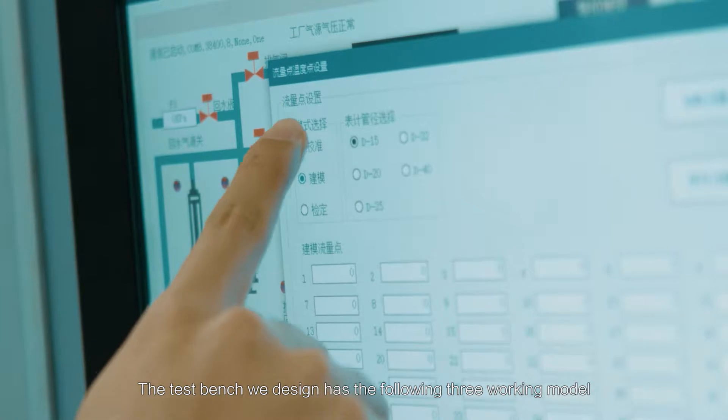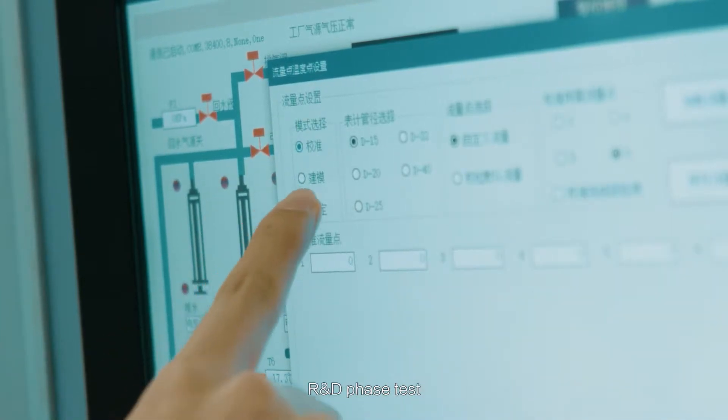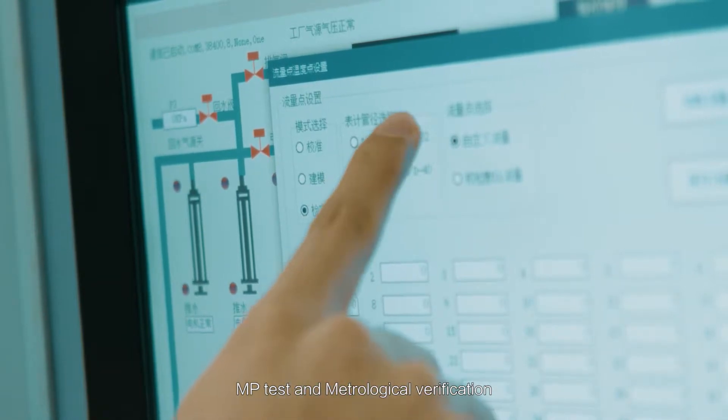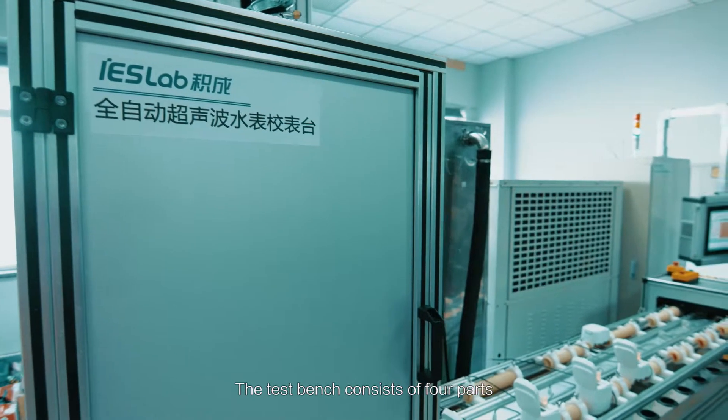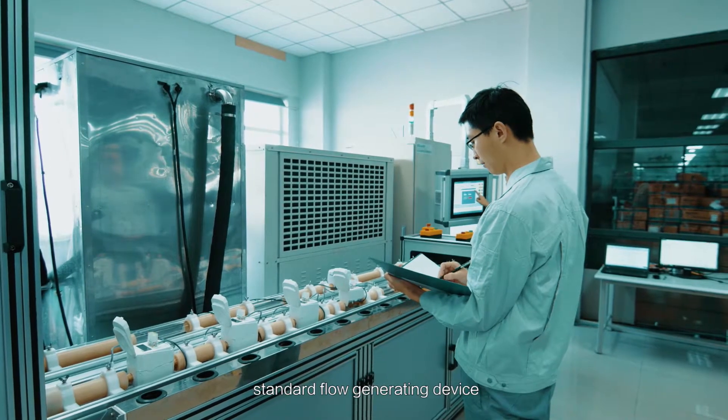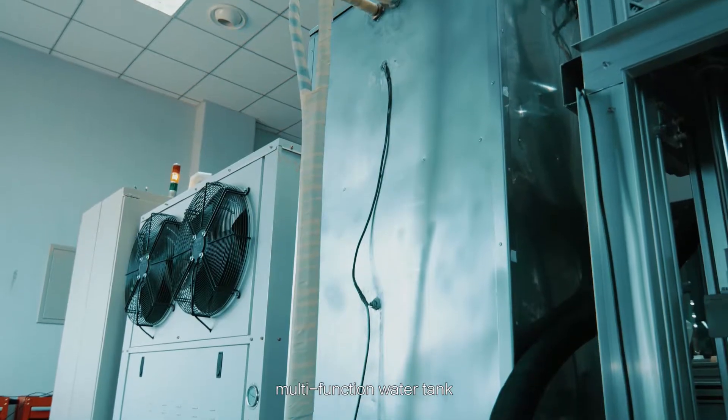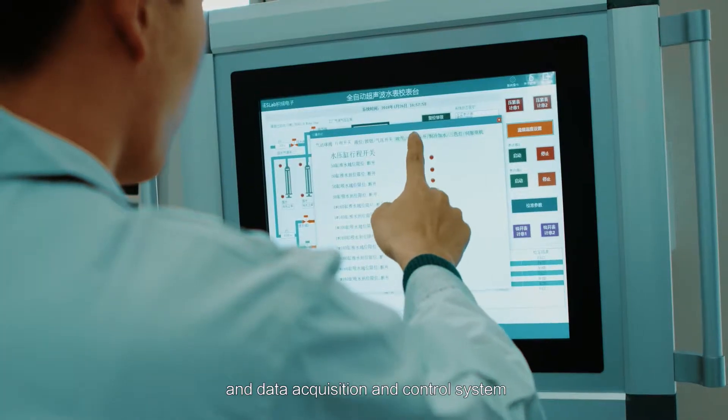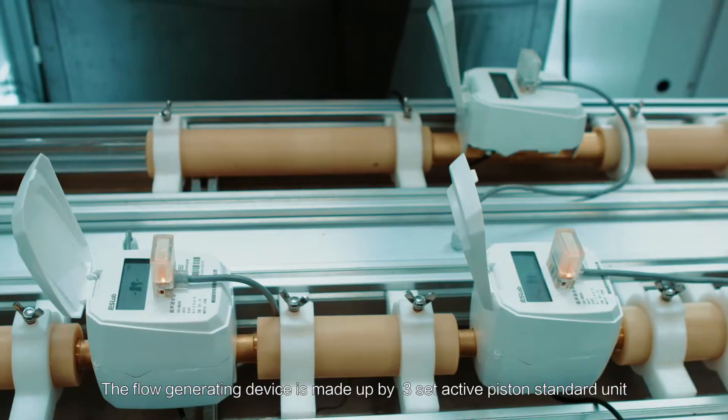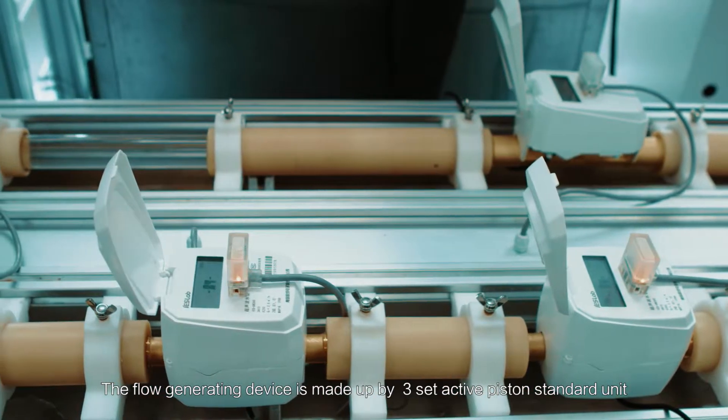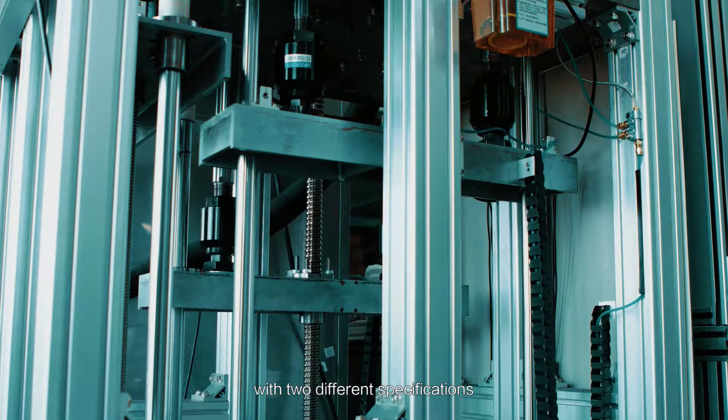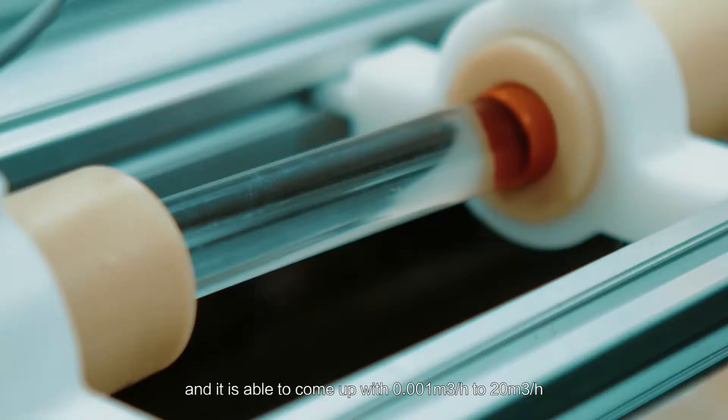The test bench has three working models: R&D phase test, MP test, and meteorological verification. The test bench consists of four parts: standard flow generating device, multifunction water tank, meter stage, and data acquisition and control system. The flow generating device is made up of three sets of active piston standard units with two different specifications.